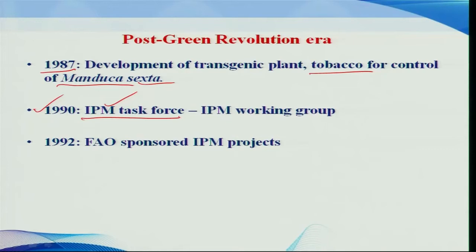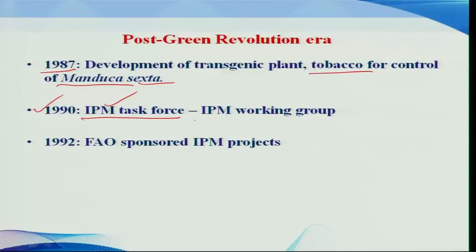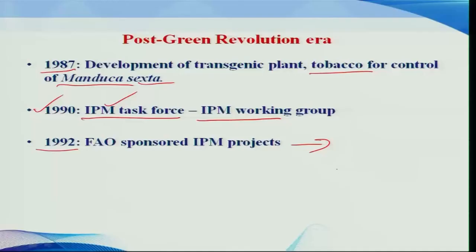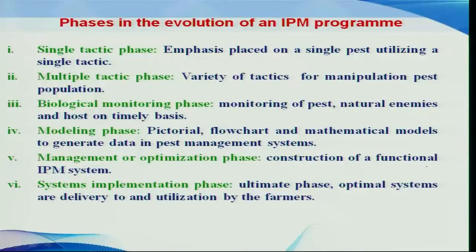Much importance was also given to implementation of IPM programs on different crops in different locations. An IPM task force was formulated to garner the attention of international programs to support integrated pest management and its development in India and other countries. This IPM task force was later reconstituted as the IPM working group. Because of these efforts, during 1992 FAO sponsored many projects around the globe, and India received projects on important crops like rice, cotton, and soybean.